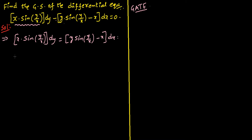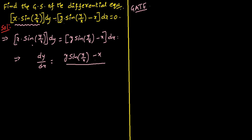From this, calculate the value of dy/dx. Take this term to the right hand side denominator, so you get y times sine(y/x) minus x, all divided by x times sine(y/x).